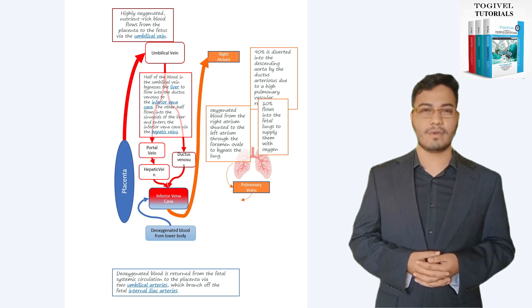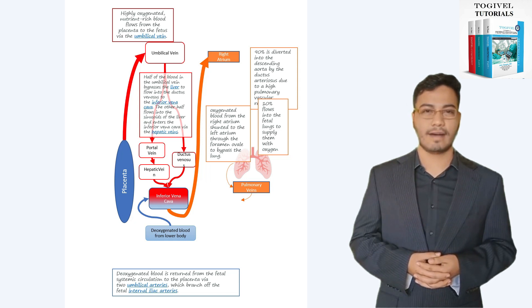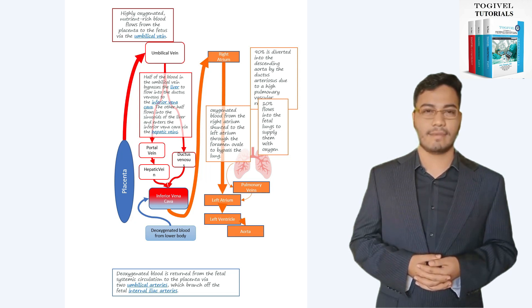Once blood enters the right atrium, the configuration of the upper interatrial septum, the crista dividens, preferentially shunts the well-oxygenated blood from the medial side of the inferior vena cava through the foramen ovale into the left heart and then to the heart and brain.